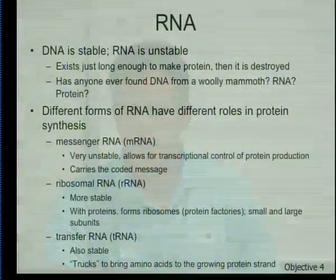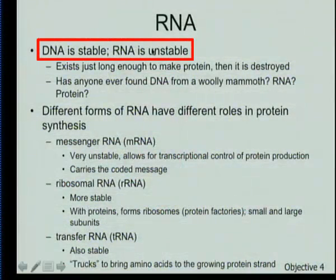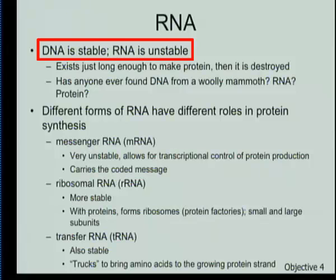That structural difference is what makes DNA stable and RNA unstable. DNA has to remain intact because we need to copy it each time cells divide, and every time we want to make a protein we make RNA from it and then make the protein. So we keep the DNA as the master copy, make RNA copies from it, and once we've made the proteins we can pull apart that RNA back into its nucleotides and recycle them to make more RNA.